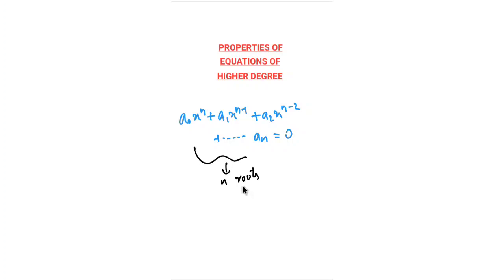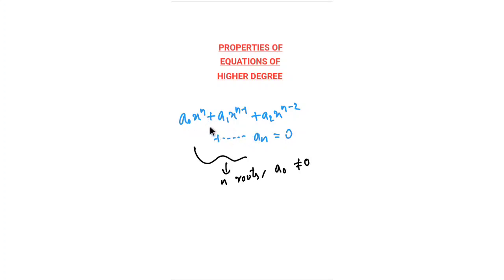We have no idea whether these roots are real or imaginary — some can be real, some imaginary. One important condition: a₀ must not equal zero, because if a₀ is zero it's not a degree-n polynomial. If I'm claiming this polynomial is of degree n, then the coefficient of xⁿ must be present and cannot be zero.